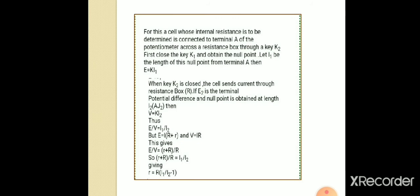A cell whose internal resistance is to be determined is connected to terminal A of the potentiometer across the resistance box through a key K2. First close key K1 and obtain the null point without including the resistance. Let L1 be the length of this null point from terminal A.